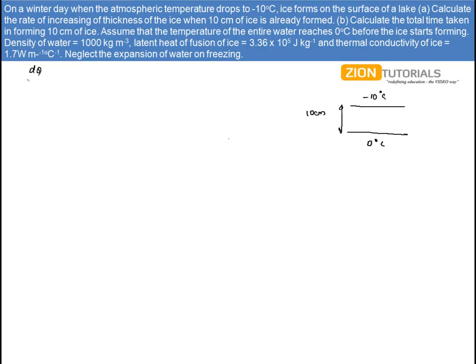So I do have dq by dt as KA delta T by L. Now, the rate of heat transference, that is Q, given by mL, is constant over here.